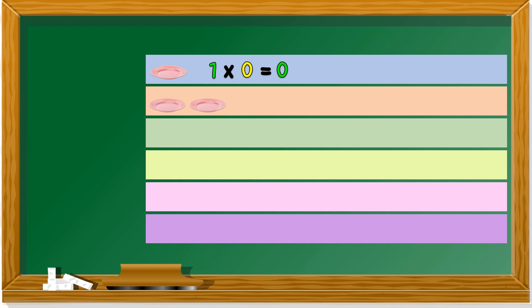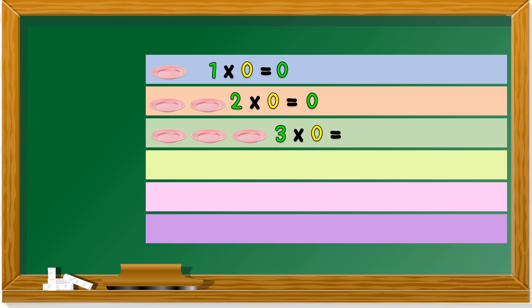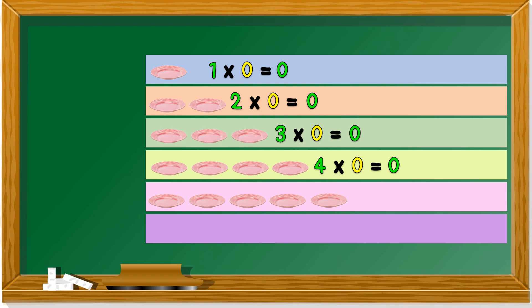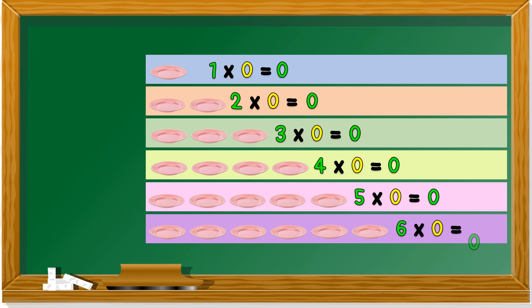Two plates but nothing on them, so two sets of plates with nothing is still zero — two times zero is zero. Three sets of nothing equals to zero. Same goes for four — four times zero equals zero. How about five? Five times zero — nothing. Still zero. Same goes for six.